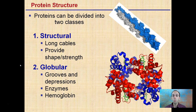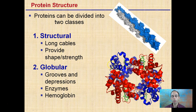There are two main classifications when looking at protein structure. There are the structural ones, which are long cables that provide shape and strength — for example, hair has these long cable-like structures. And then there are globular proteins. These have grooves and depressions and a more three-dimensional globe-like shape. These are typically enzymes, and hemoglobin also has this type of classification.